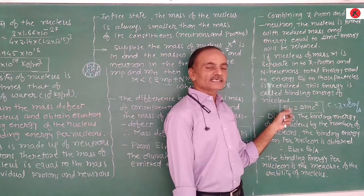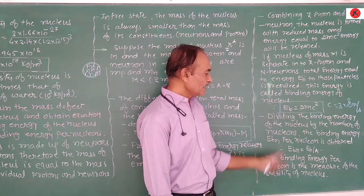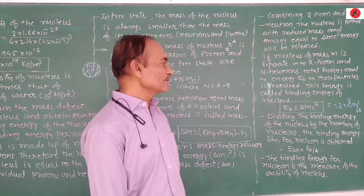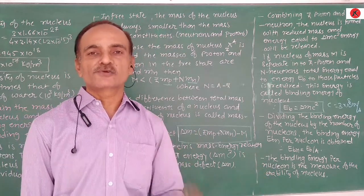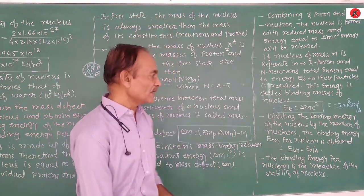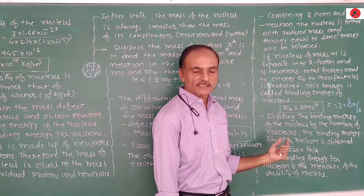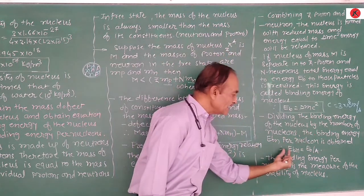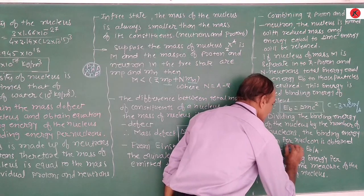If the binding energy Eᵦ is divided by the number of nucleons A, we obtain the binding energy per nucleon. The nucleon is the total number of protons and neutrons, since protons and neutrons are both commonly known as nucleons. Therefore, binding energy per nucleon Eᵦ/ₙ = Eᵦ / A.